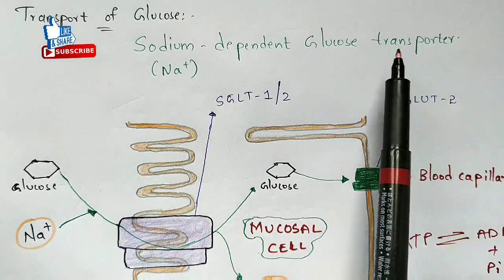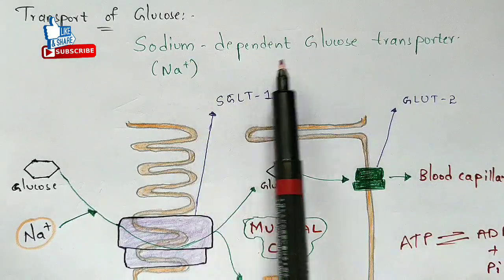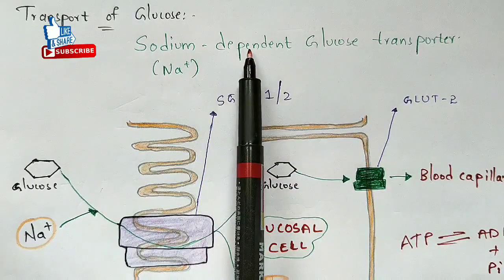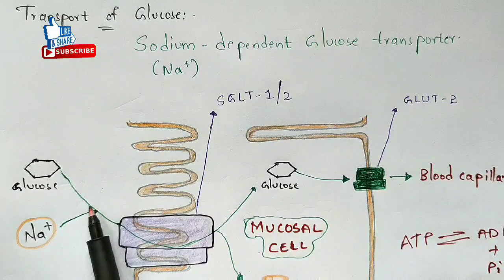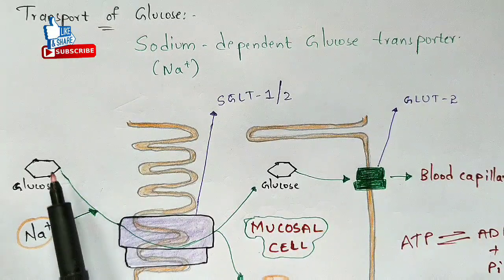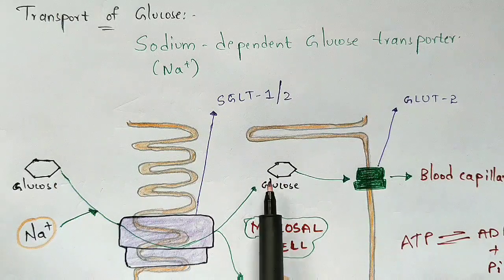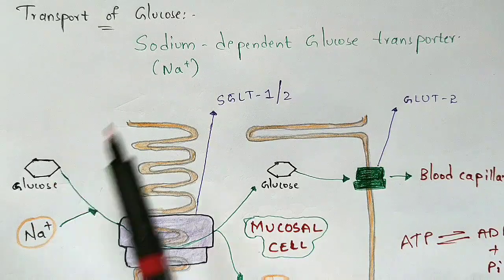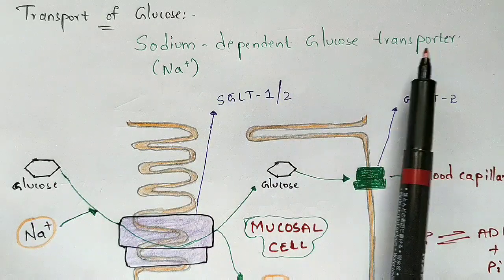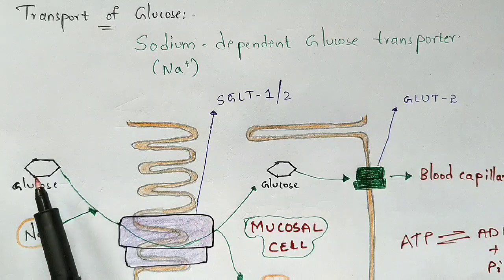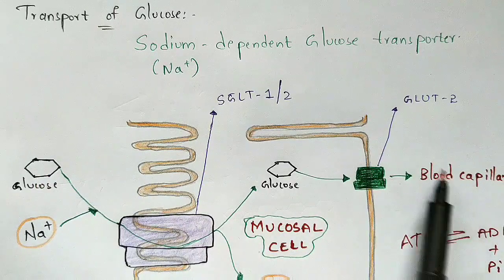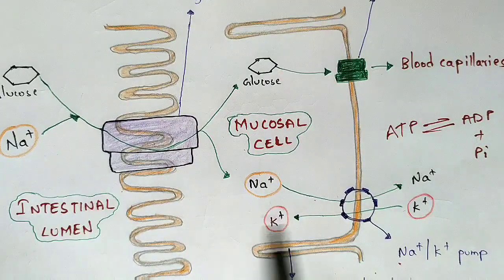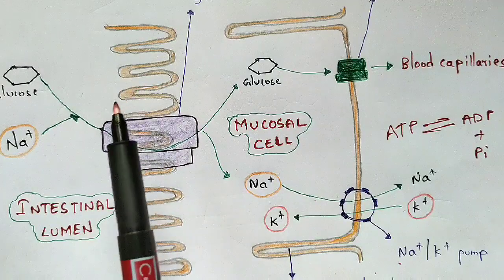This transporter is called the sodium dependent glucose transporter because it depends upon the sodium molecule as a source of energy to help glucose enter the mucosal cell and subsequently transport glucose into the blood capillaries.